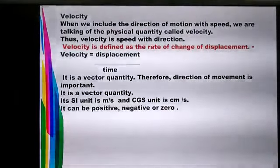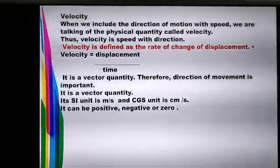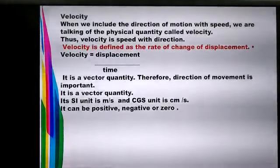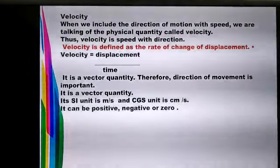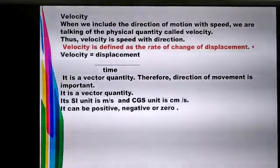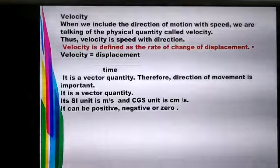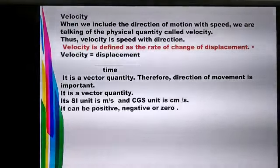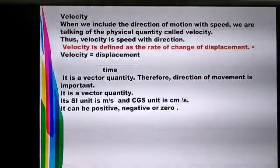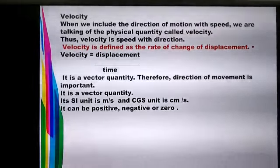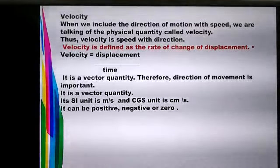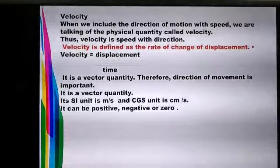Just as displacement is related to distance, there is another physical quantity related to speed. Speed tells us how fast or how slow an object is moving. When we include direction along with speed, that is called velocity. Whenever we include the direction of motion with speed, we are talking about a new physical quantity called velocity.